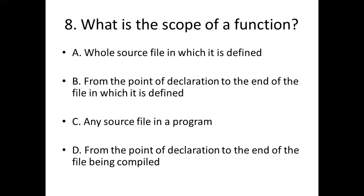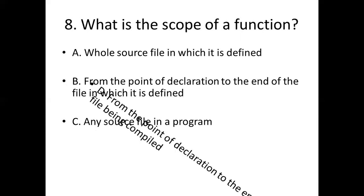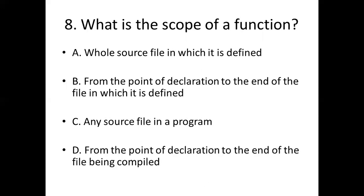Eighth bit. What is the scope of a function? Option A: whole source file in which it is defined. Option B: from the point of declaration to the end of the file in which it is defined. Option C: any source file in a program. Option D: from the point of declaration to the end of the file being compiled. Answer: Option D, from the point of declaration to the end of the file being compiled.